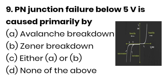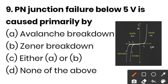The next question: for a PN junction below 5 volts, what type of breakdown occurs? Option A is avalanche breakdown, option B is Zener breakdown, option C is either A or B, and option D is none of the above. When the breakdown voltage is above 6 volts it is avalanche breakdown, and when it is below that it is Zener breakdown. So the correct option is option B — Zener breakdown.